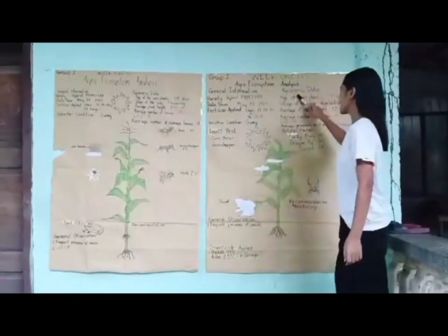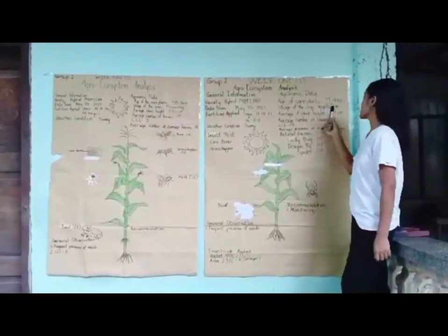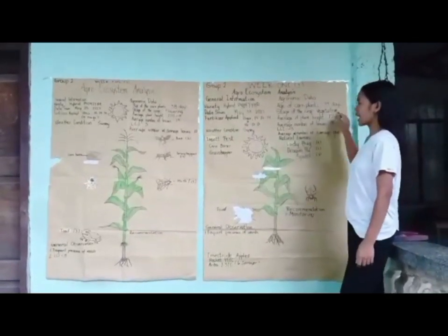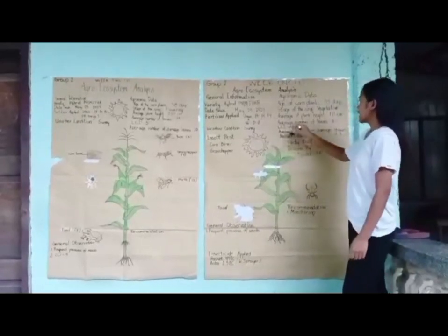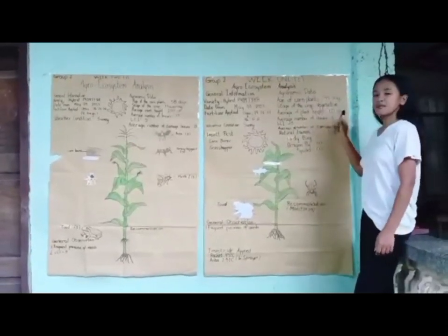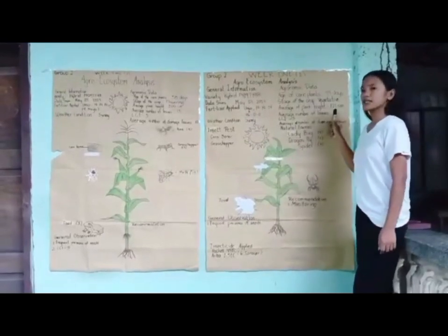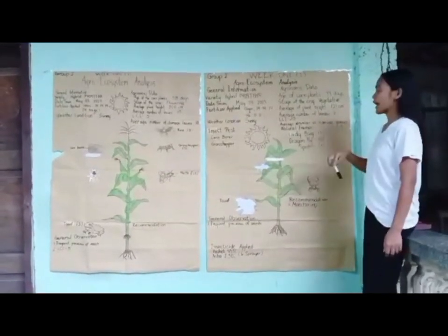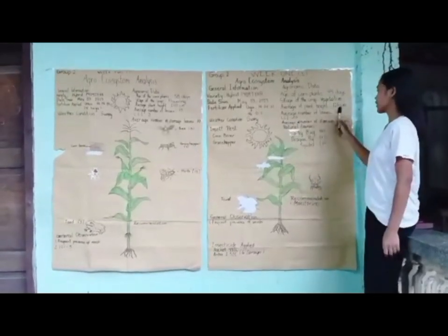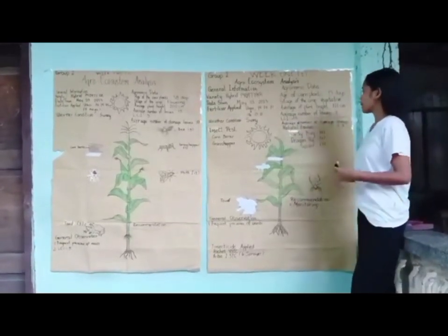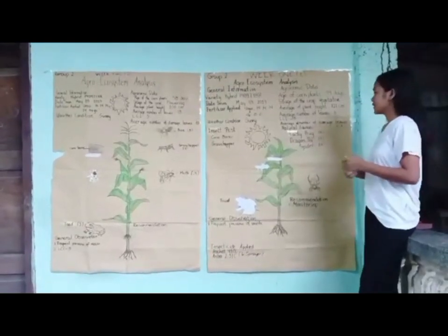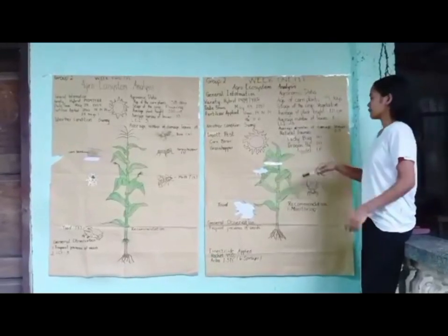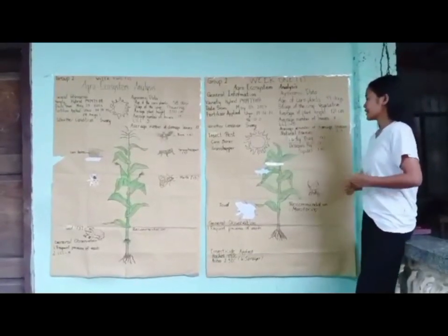The agronomic data: age of corn plants is 44 days since June 16 when data collection began. The stage of the crop is vegetative. Average plant height of the 10 crops sampled is 421 cm. The average number of leaves is 11, the average number of damaged leaves is 4.3, and the LCI or LCC is 5.